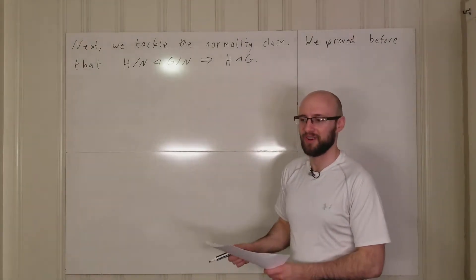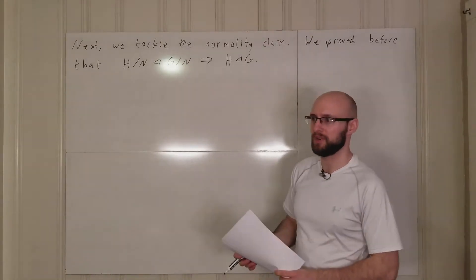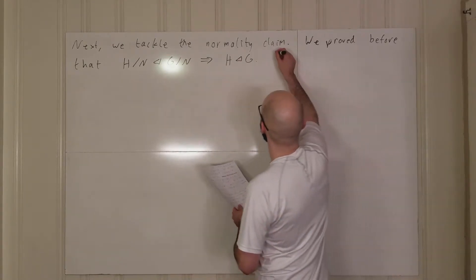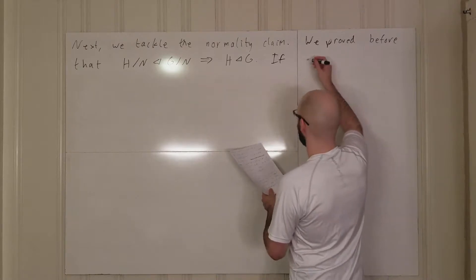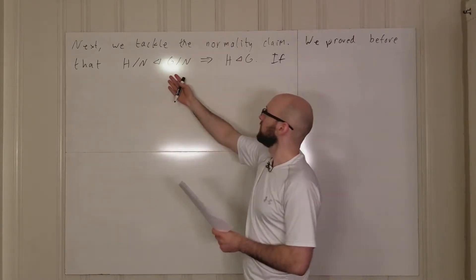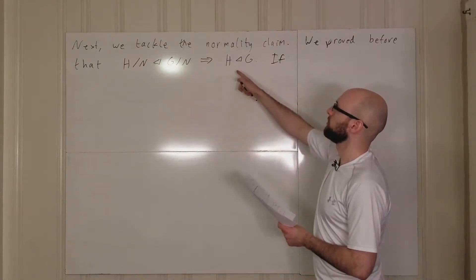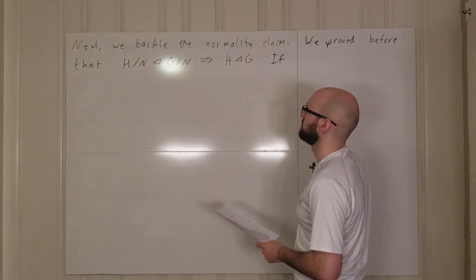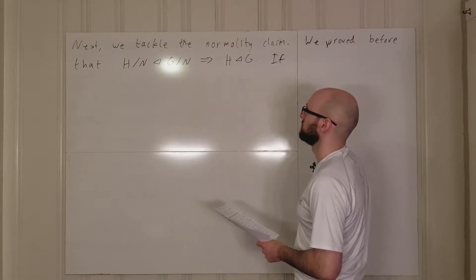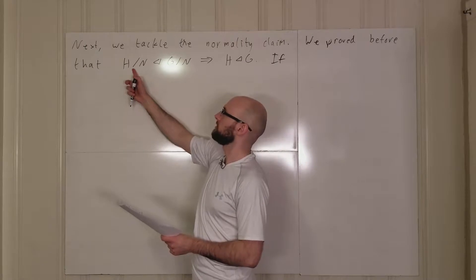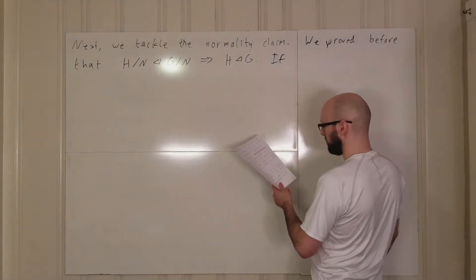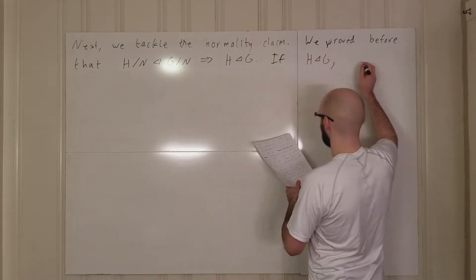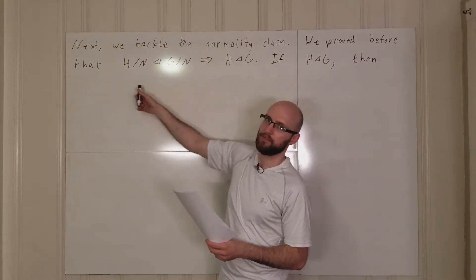Now that I'm not pressed for time in this video, I'm going into a lot more depth. So that's one direction: if we have normality in G mod N then we have normality in G, where H is a subgroup of G which contains N. Now, if H is a normal subgroup of G, we want to prove that H mod N is normal in G mod N, where H is a subgroup which contains N.